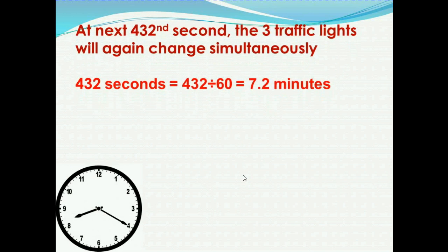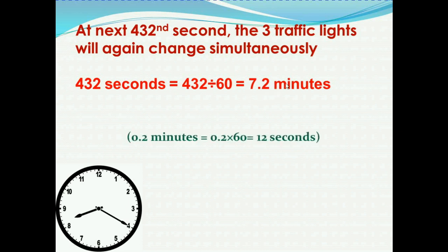So the three traffic lights will again change simultaneously 432 seconds after 8:20 a.m. We need the exact clock time, so we convert 432 seconds to minutes. Dividing 432 by 60 gives 7.2 minutes. The 7 whole minutes give us the minute part, and 0.2 minutes × 60 = 12 seconds.